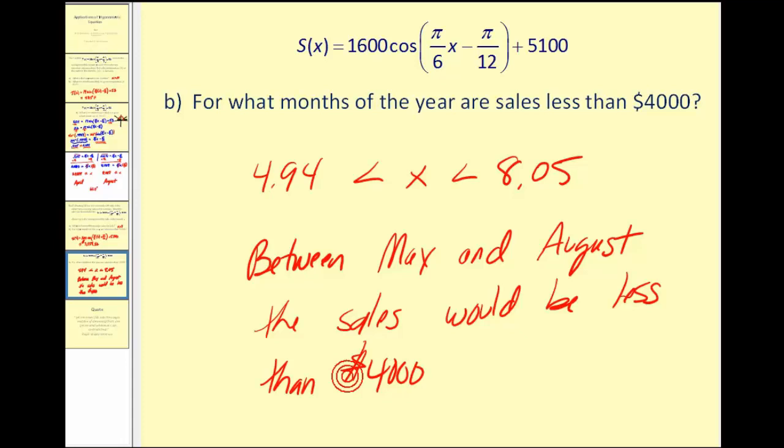Now one thing we have to be careful about here, some textbooks are very technical. If we say x equals eight is August, then that means from seven to eight would be August. Anything larger than eight would actually fall into the next month or September. You can see I'm rounding to the nearest month. So this is close enough to five for me and this is close enough to eight. Therefore we'll say between May and August.